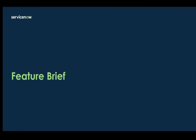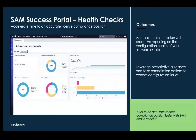So if you want to understand this feature in more detail, let's see this. As you can see, this is the health check, wherein we have all the details mentioned, like suite checks available, health check issues by priority, the health check score, and the health check issues by category. This feature helps to accelerate time to value with proactive reporting on the configuration health of your software state, providing prescriptive guidance so that customers and partners can take remediation actions to correct these configuration issues.